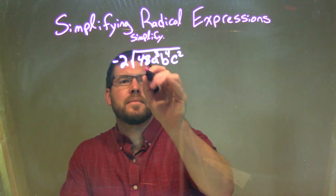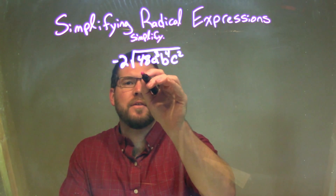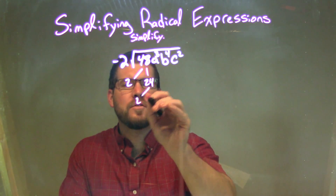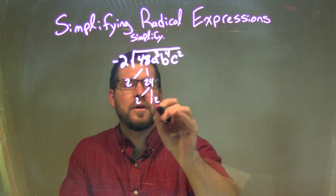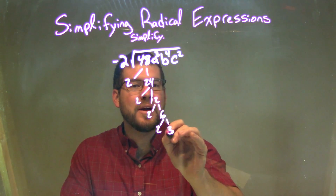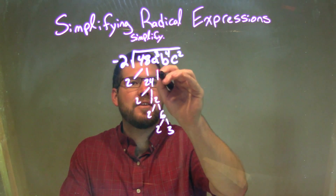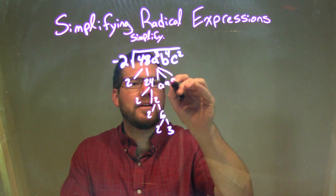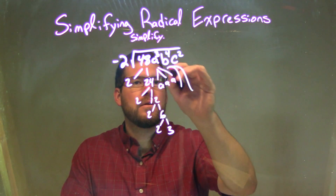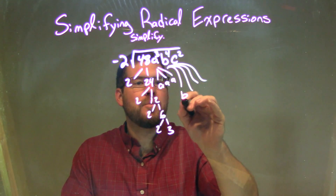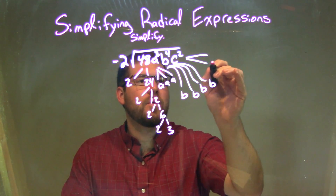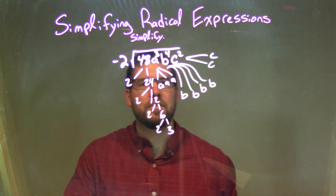Let's break this down. 48 breaks down as: 48 is 2 and 24, and 24 is 2 and 12, and 12 is 2 and 6, and 6 is 2 and 3. Then a to the third is just a times a times a, b to the fourth is b times b times b times b, and c squared is c times c.